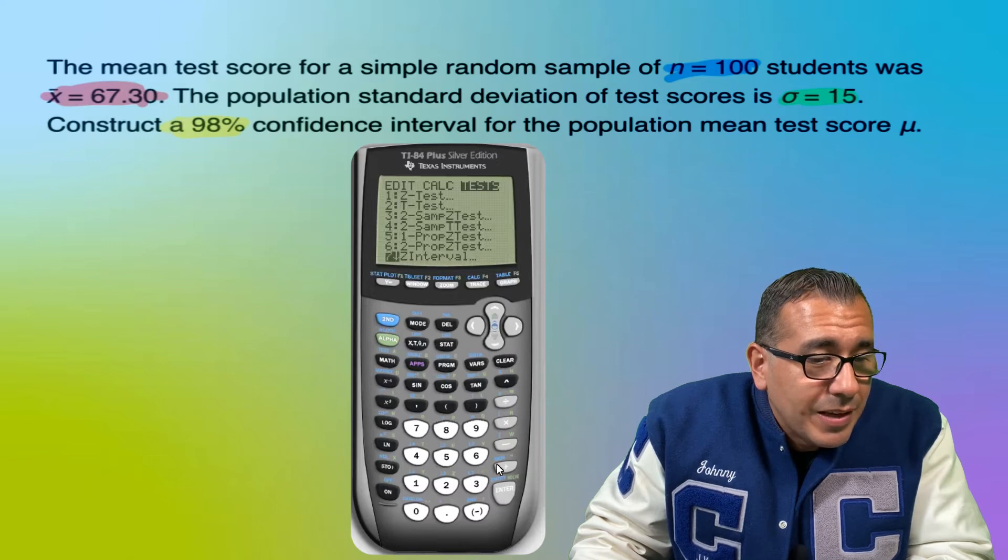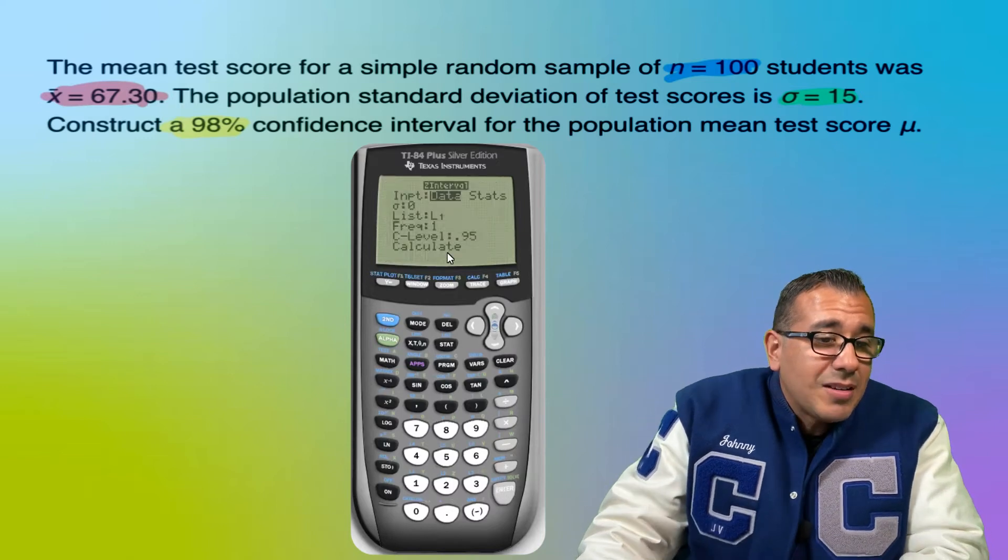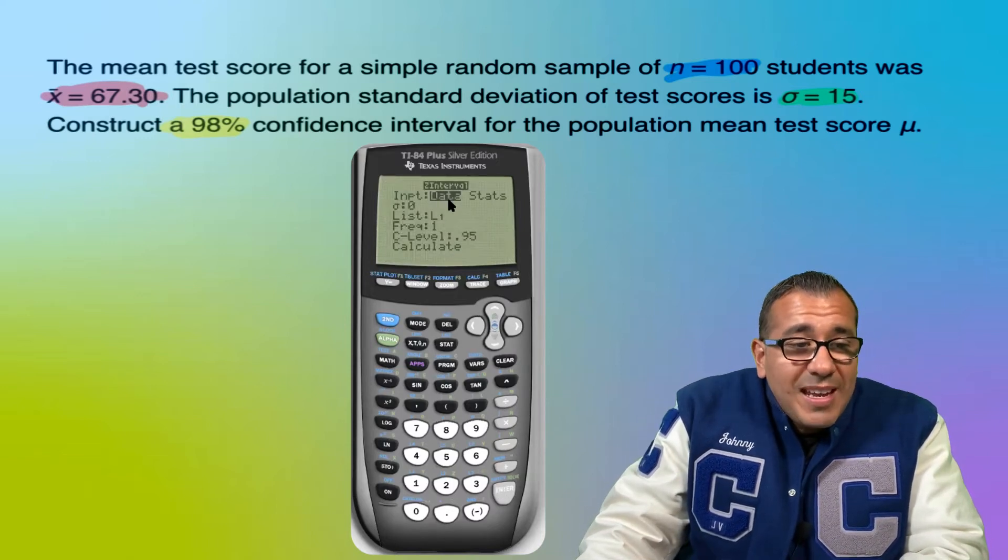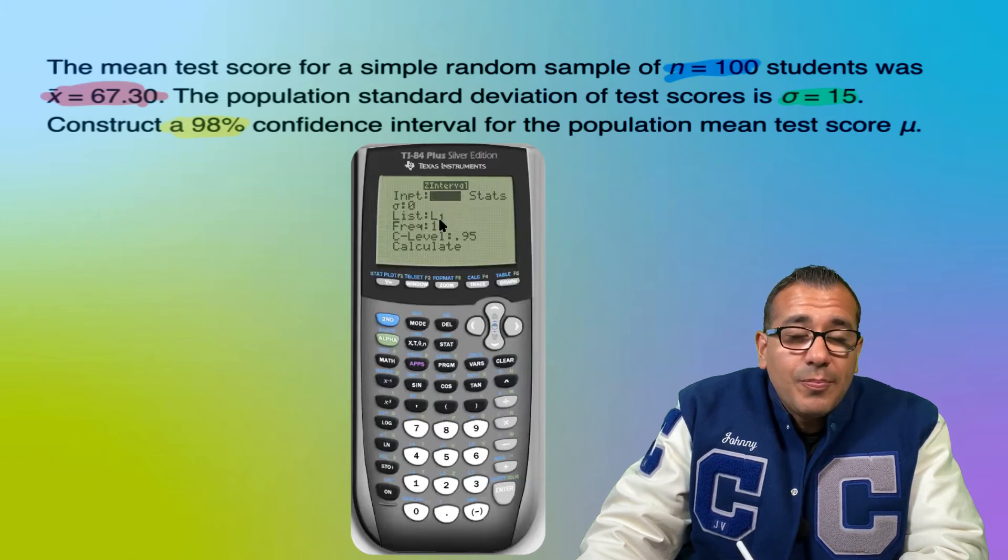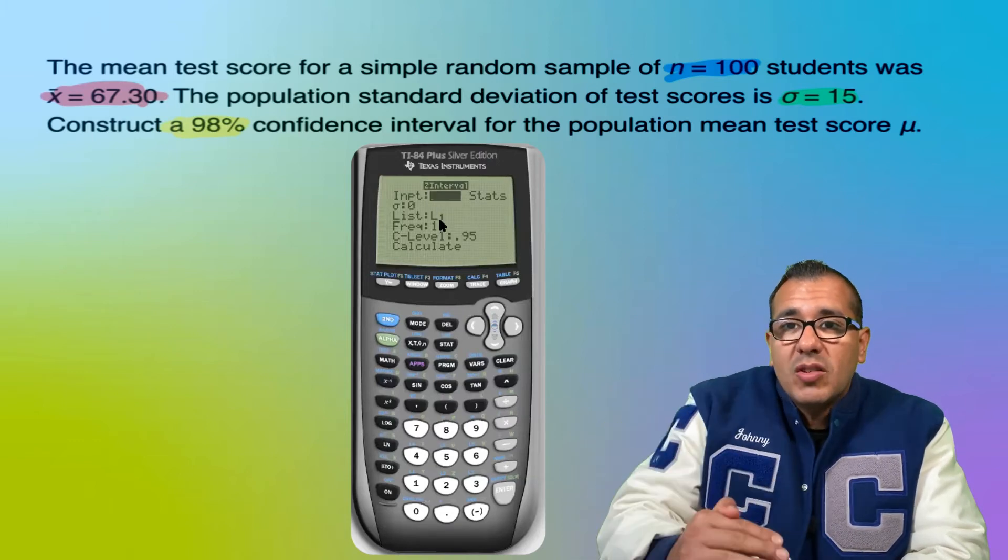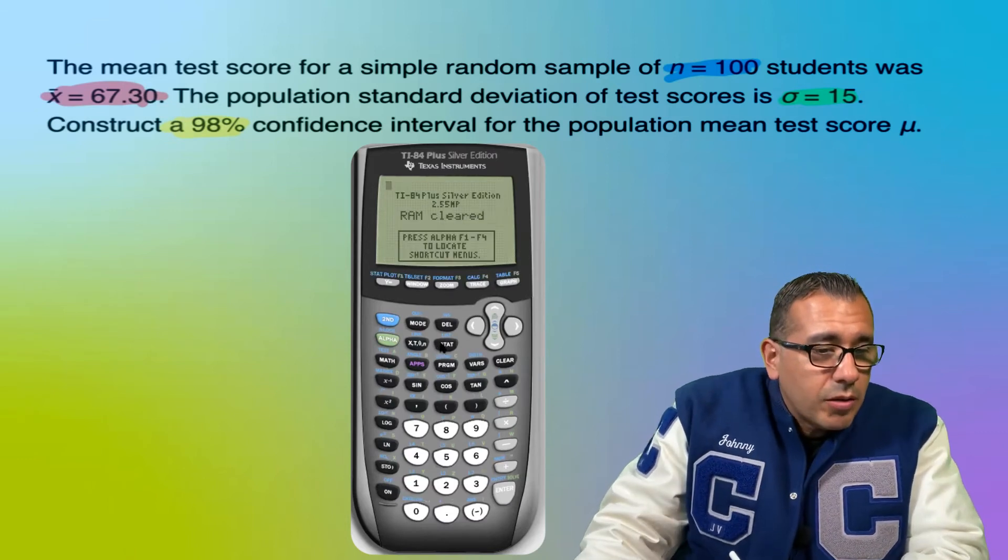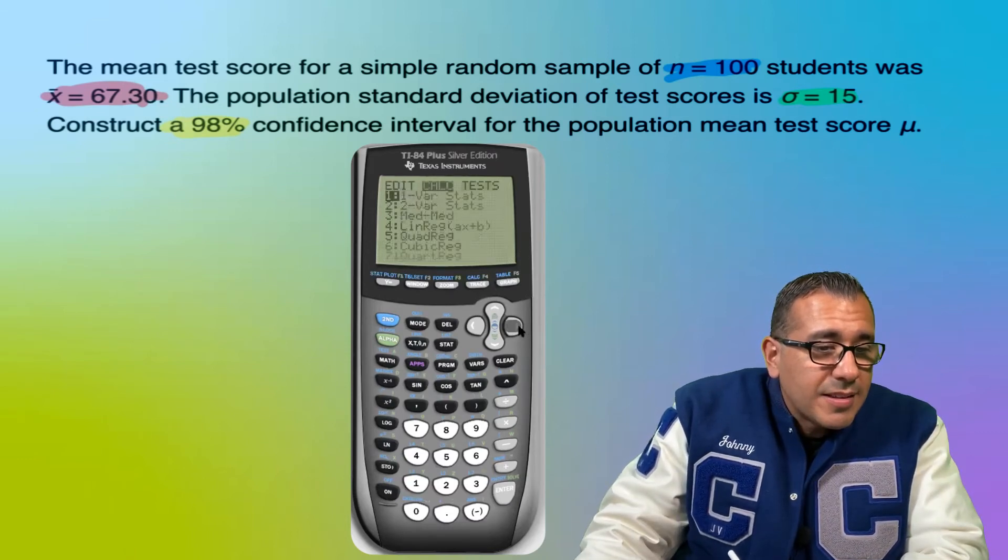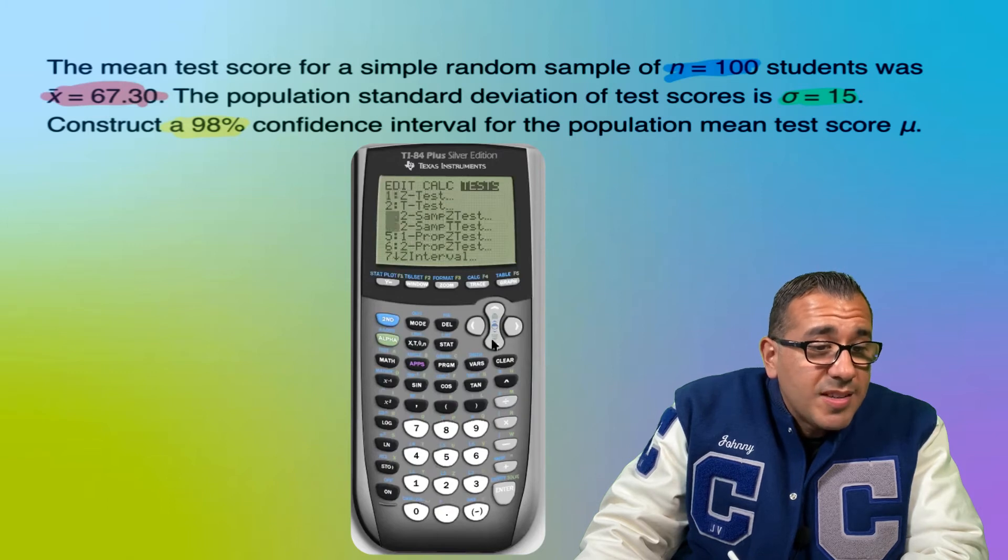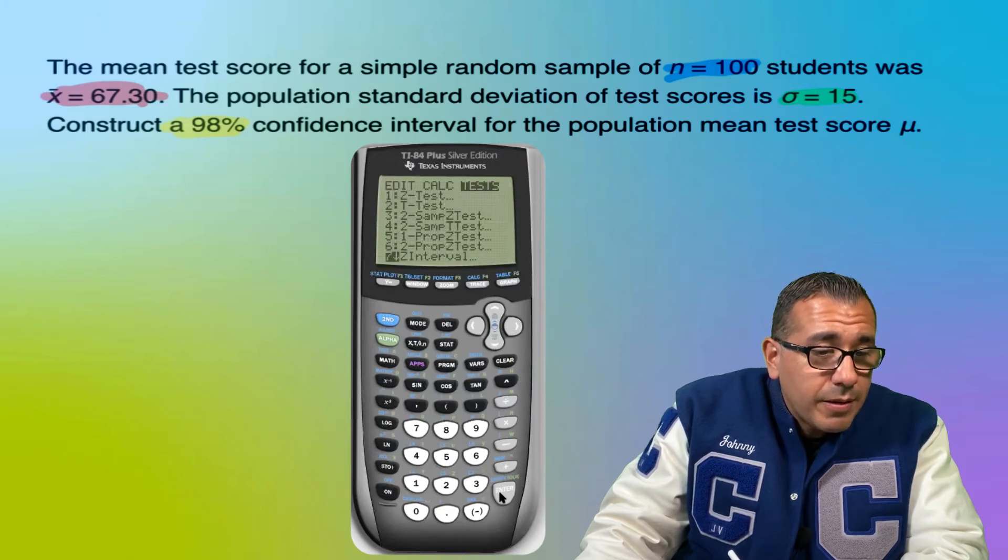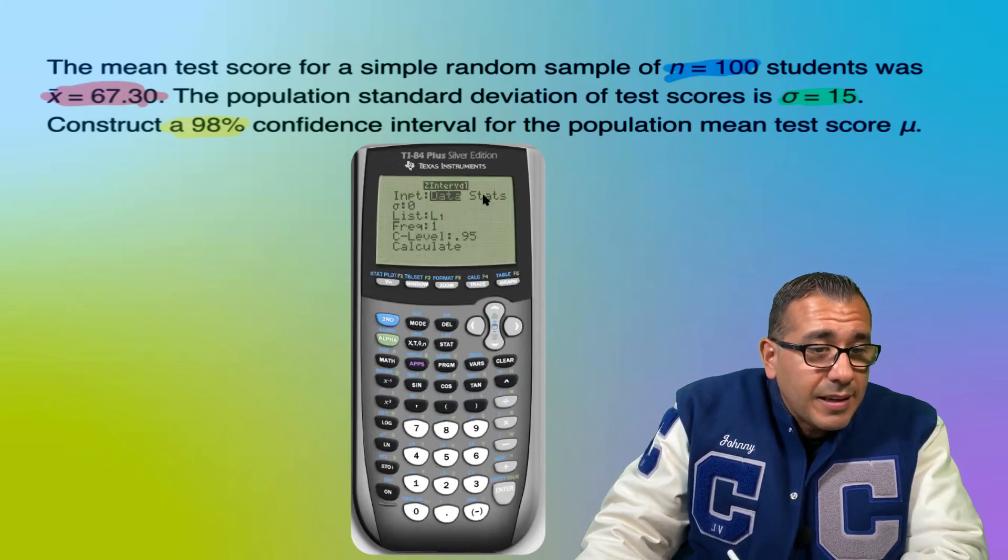Let me go down to seven, hit enter. And notice if you have the list of information, if you have all the data points, make sure data is selected. We don't, we have the statistics. So we're going to go to STAT, go to TEST, go down to Z interval. All right, Z interval. And then again, make sure stats is selected, hit enter.